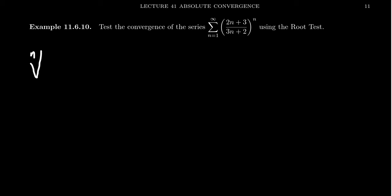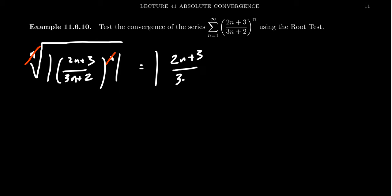If you take the nth root of this term—the absolute value of (2n + 3)/(3n + 2) all raised to the nth power—the nth root is going to cancel the nth power. And we end up with the absolute value of (2n + 3)/(3n + 2). If we take the limit here, because this is a balanced rational function with 2n on top and 3n on the bottom, this converges to the limit 2/3.